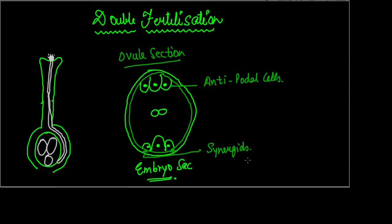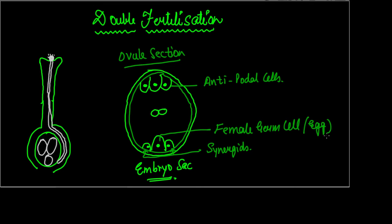The synergids also don't perform much of a function. The middle cell is our main cell — it is the female germ cell, or the egg. The two nuclei in the center are called polar nuclei.